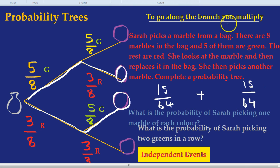With fractions, if you have the same denominator as we do here, you can simply add the numerator. 15 plus 15 equals 30 over 64.